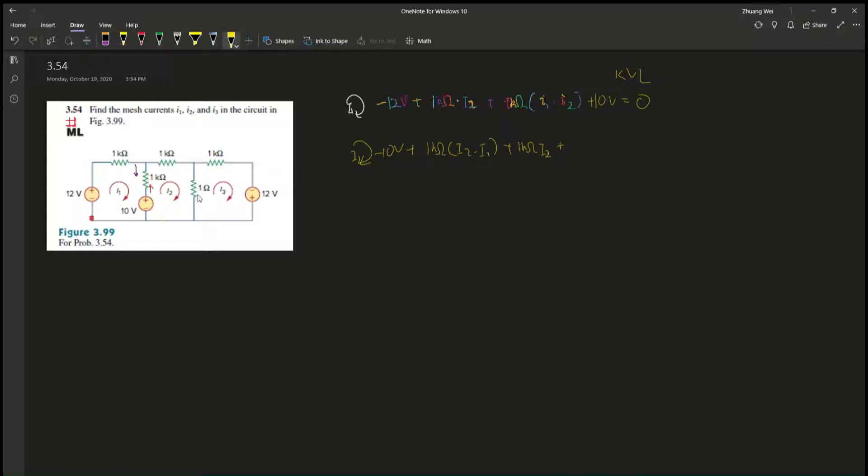And then plus 1k ohm i2, and then plus 1k ohm. So this is I think a typo. I'm going to use 1k ohm just for consistency, but if your professor wants you to use one ohm, go for it. So i2 minus i3, and then that's it, gives you zero.